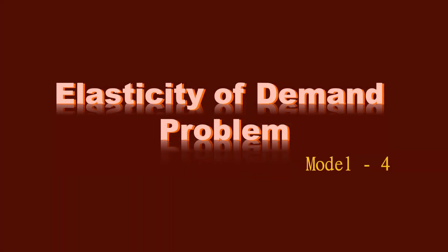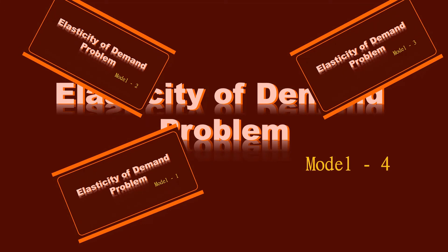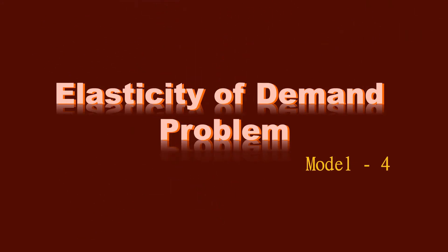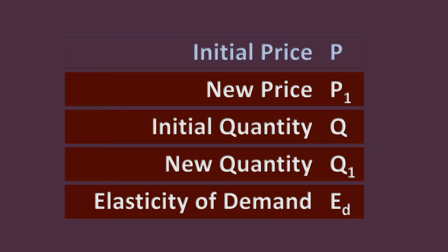Elasticity of Demand Problem Model 4. This is the fourth model in this series. New viewers, please view the first three models — links are given in the description. Students, view all nine models to get the full benefit. In this model, all the values except the initial price are given. We are going to find the initial price. Keep track of the changes introduced in each model to be systematic in learning different models of Elasticity of Demand problems.